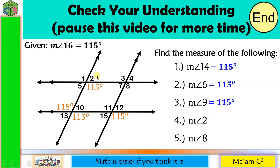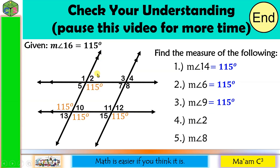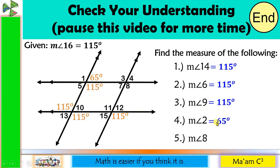Next: angle 2. Here is angle 2. If this is 115 degrees and this is a straight line, then this one is 65 degrees. Angle 2 is 65 degrees.